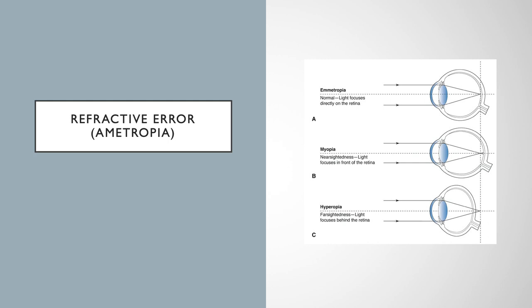These images are examples of how refractive error results in a focal point that is too anterior or posterior to the retina, resulting in a blurry image.